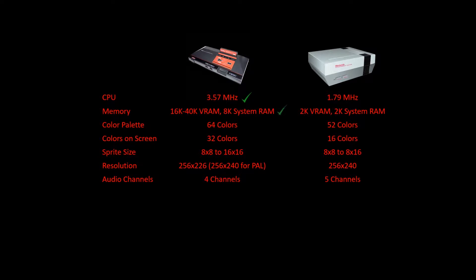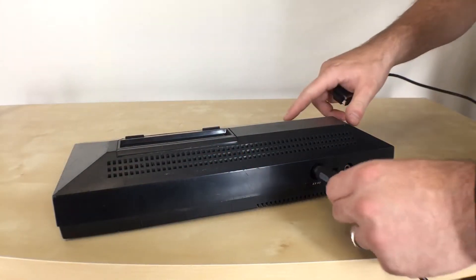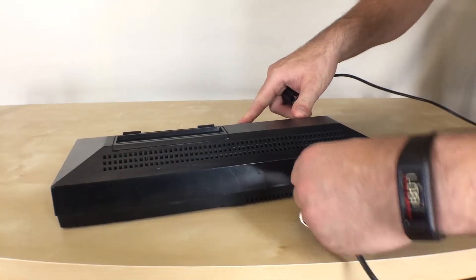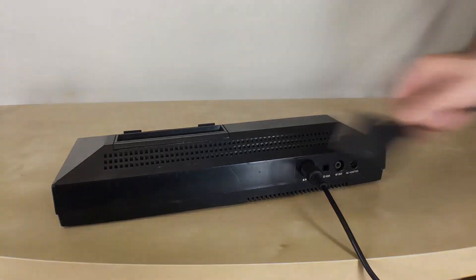Combining all of this, we can see that the Sega had a technically superior console. Sega also had native support for RGB using SCART. While it wasn't readily available in North America, many parts of the world including Europe or Japan using the JP21 could benefit from this. You can also get a SCART to HDMI adapter for modern equipment, but that's another topic entirely.